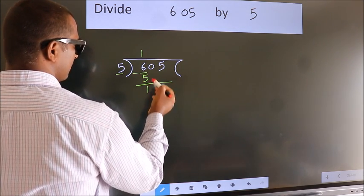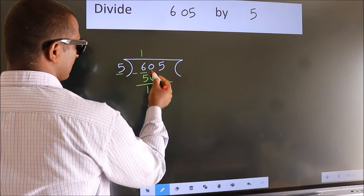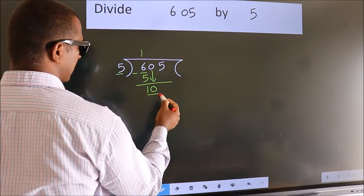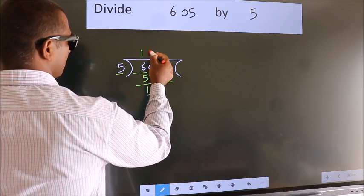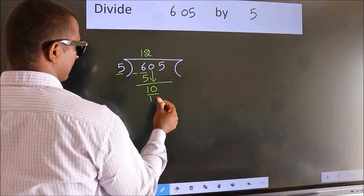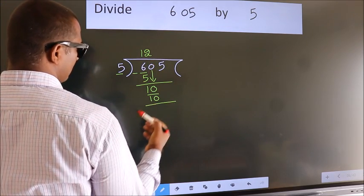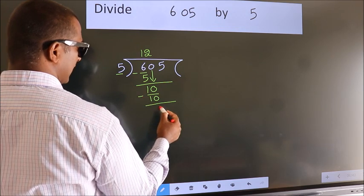After this, bring down the beside number. So, 0 down. So, 10. When do we get 10? In the 5 table. 5 twos, 10. Now we subtract. We get 0.